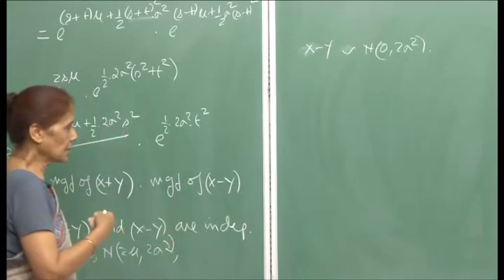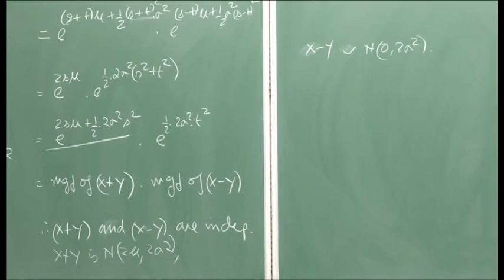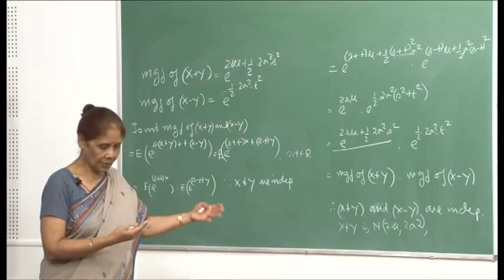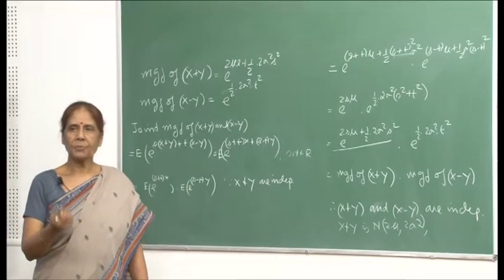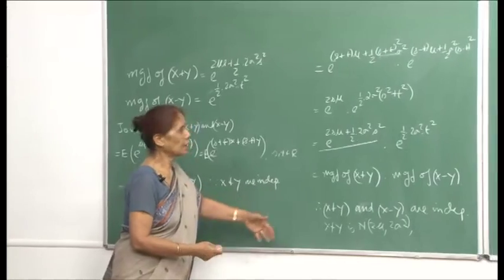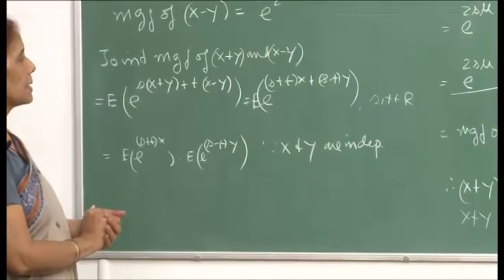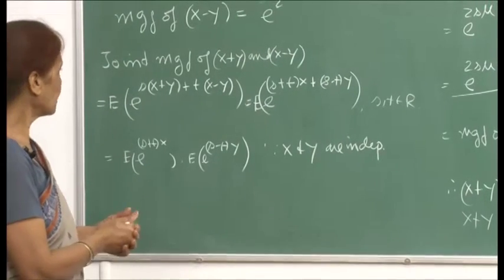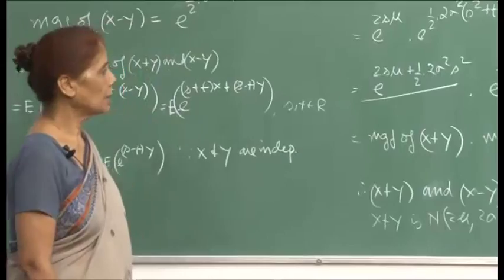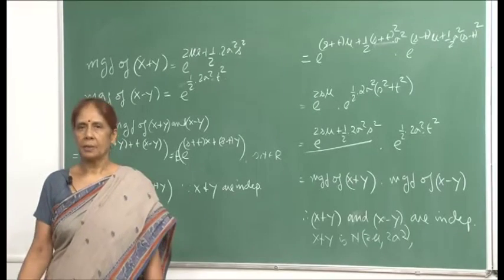Through a series of examples, I will revisit results we obtained by other methods and apply the concept of joint MGF to sums of random variables. This method is sometimes easier and faster. When other methods do not work, the joint MGF proves to be quite handy. Thank you very much.